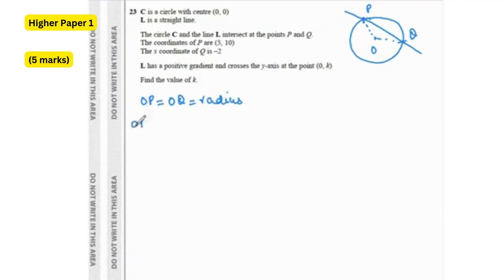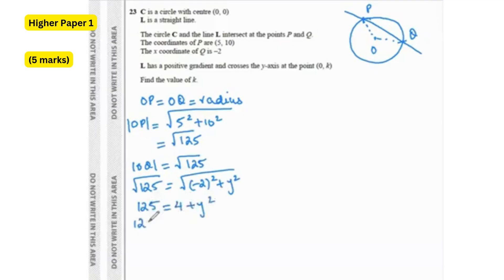So we can find the distance of OP, which is going to be 5 square plus 10 square. That's square root of 125. OQ is also square root of 125. So using this value, we can find the y coordinate of Q. Square root of 125 equals to negative 2 square plus y square. The square roots get cancelled out. So 125 is 4 plus y square. 125 minus 4 equals to y square. 121. The square root on both sides. So it's plus minus 11. Now keep in mind that line L has a positive gradient. So this is where this plus minus value will come in hand.